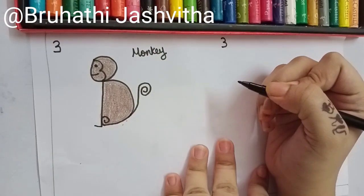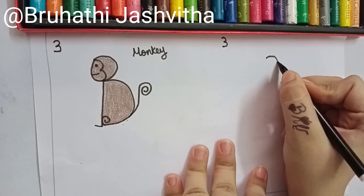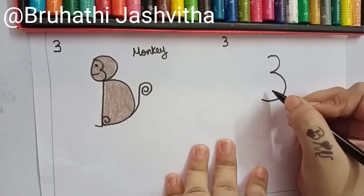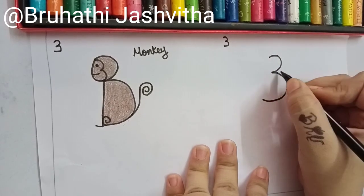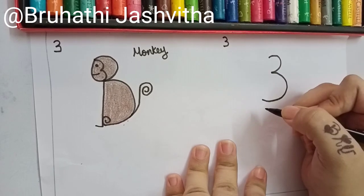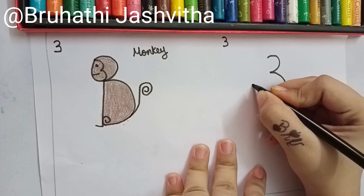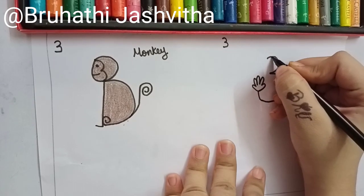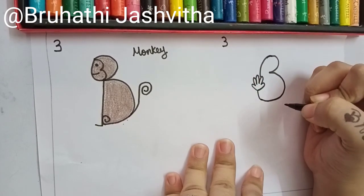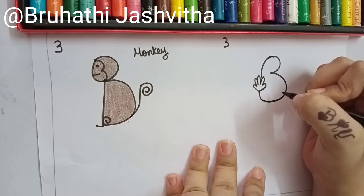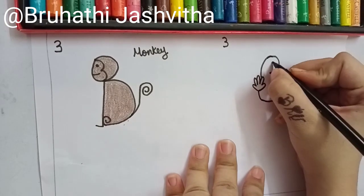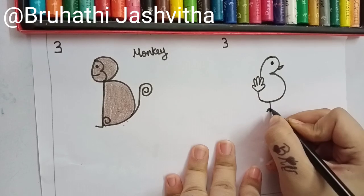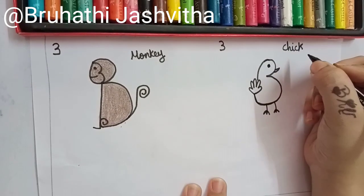Now I am going to tell you one more story with number 3. This number 3 also has a small head and big tummy. The two ends of number 3 once met and wanted to meet again and again, so they liked to meet again and again. When they met, they gave a high five to each other. Can you guess what it is? Yes, it is a chick. So let us make one eye, then a small beak, then two legs. Now let us color it.